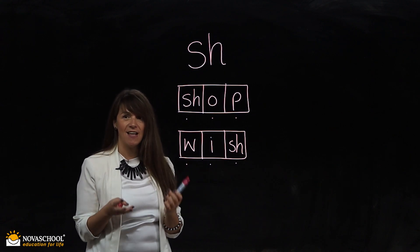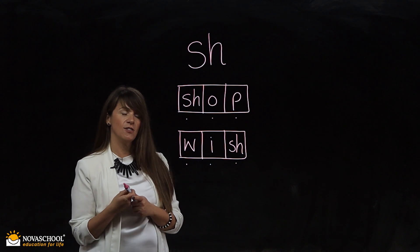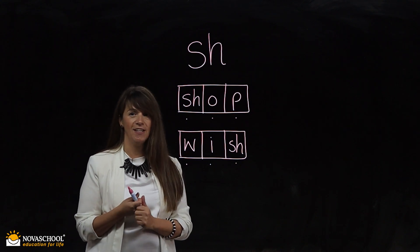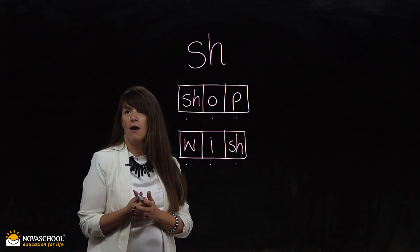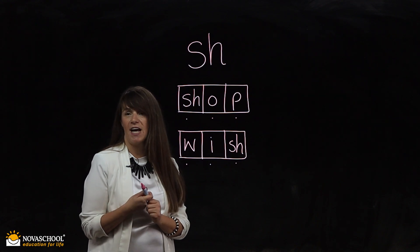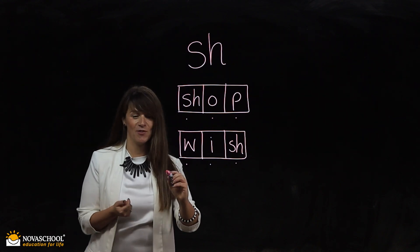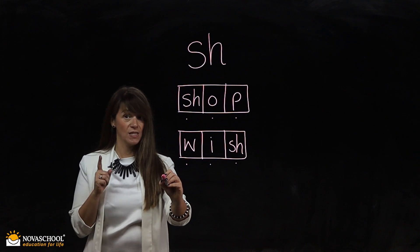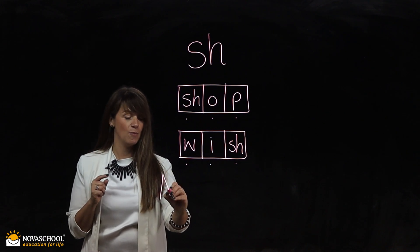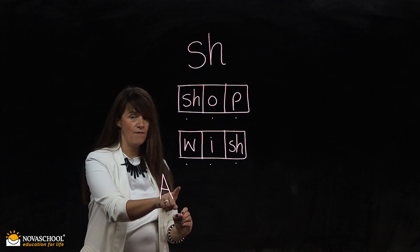Okay, let's write a sentence together. I'm going to think of a sentence with shh words in. I'm going to think of a silly one. A fish in a shop. Ready? So here we go. First word always has a capital letter at the beginning of the sentence. Finger space.